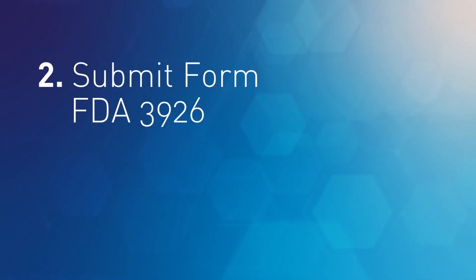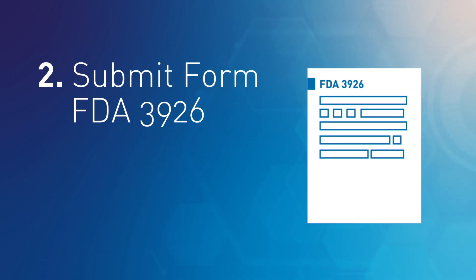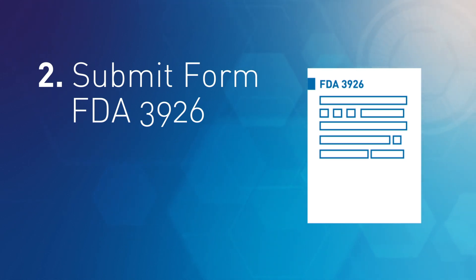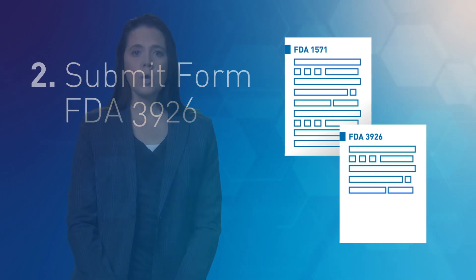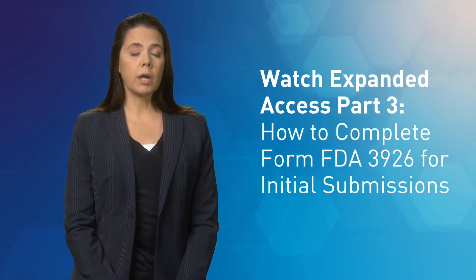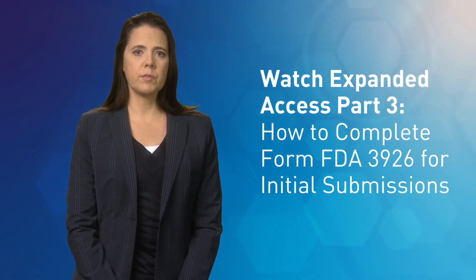Step two: submit form FDA 3926. Form FDA 3926 was specifically designed for single patient expanded access requests submitted by physicians and is the easiest way to apply. If you are familiar with form FDA 1571, you may still use that form; however, we encourage use of the much simpler form FDA 3926. For step-by-step instructions on completing form FDA 3926, watch part three of this video series.